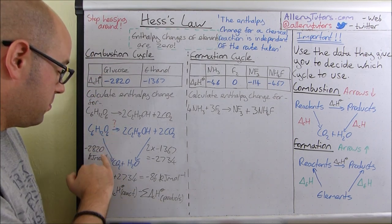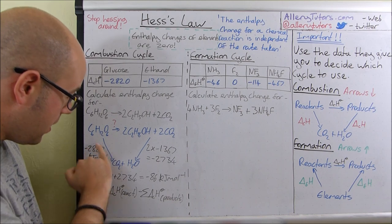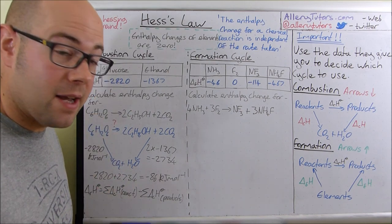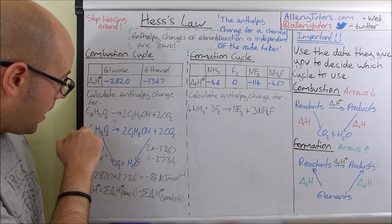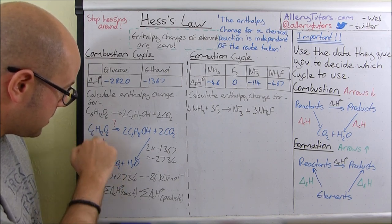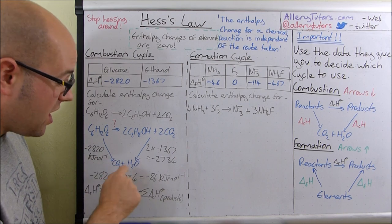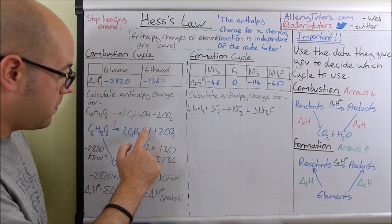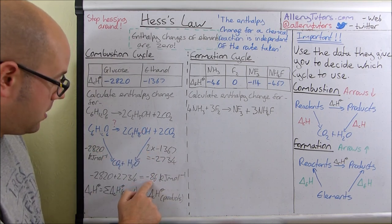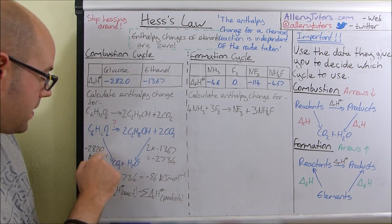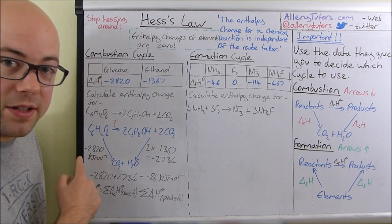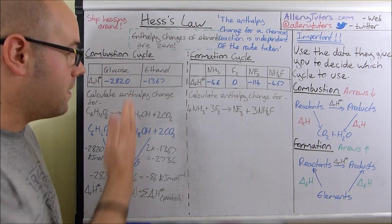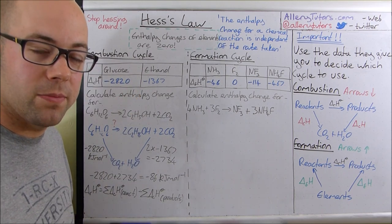Let's say they give you the enthalpy of reaction but want you to work out the combustion of one component — it's exactly the same approach. All you do is say, right, I don't know what this value is, and I need to get from here to here. So you go against the arrow here and against that arrow there: plus 2734 and then plus 86 should give you that value. It doesn't matter what they ask you to work out — set it out in the same way and if they've given combustion data, use the combustion cycle.